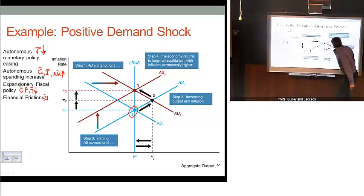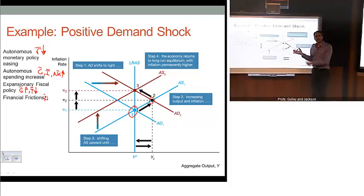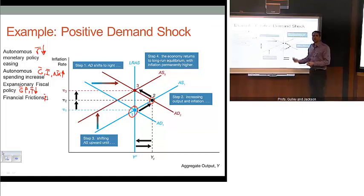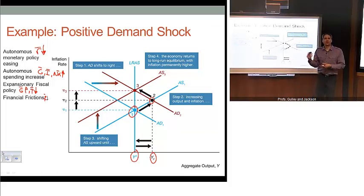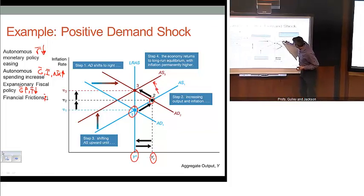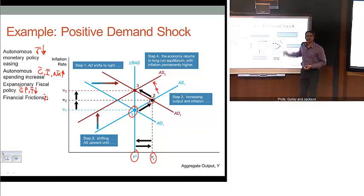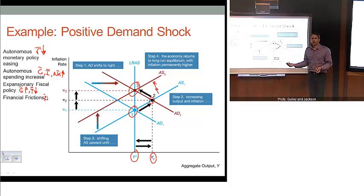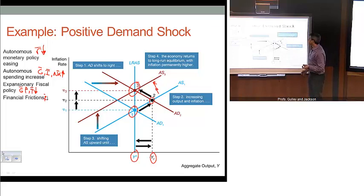In our new short-run equilibrium, we end up at point 2. As we discussed with the self-correcting mechanism, at point 2 we can't persist there forever — we're producing beyond our potential level of output at Y2, which puts strain on labor resources, capital, and input resources. Over time, once we get to point 2, inflation expectations will rise, and that will shift our aggregate supply curve up until we end up at point 3. At point 3, we have our new long-run equilibrium, and we'll stay there unless other shocks move us away.